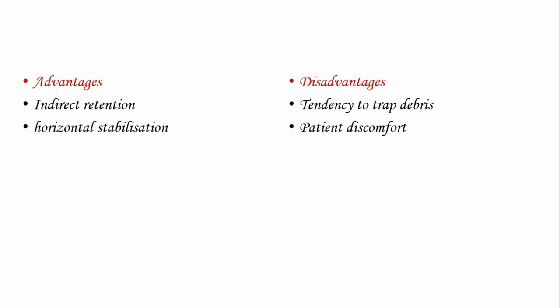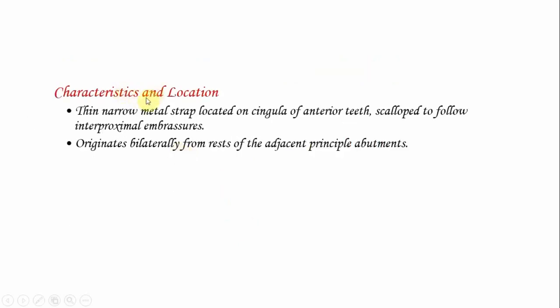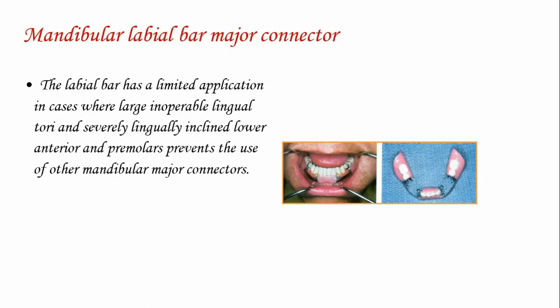Advantages of the double lingual bar: provides indirect retention and horizontal stabilization. Disadvantages: tendency to trap debris and patient discomfort due to potential tongue irritation. The mandibular continuous bar retainer or singular bar is used when improper axial alignment of anterior teeth necessitates excessive block out of interproximal undercuts. It is located slightly above the cingulum of anterior teeth and can be used alone or with a lingual bar, with a step-back design for diastema patients. Contraindicated in lingually tilted anterior teeth and where wide diastema between mandibular anterior teeth exist. It is a thin metal strap on the cingulum of anterior teeth, scalloped to follow interproximal embrasures, originating bilaterally from the rests of adjacent principal abutments.